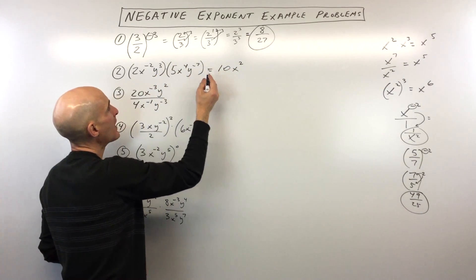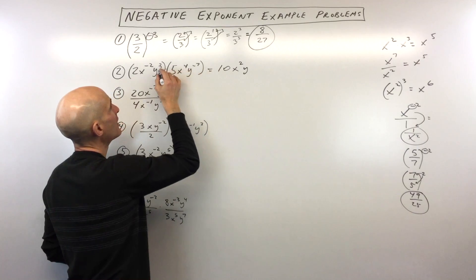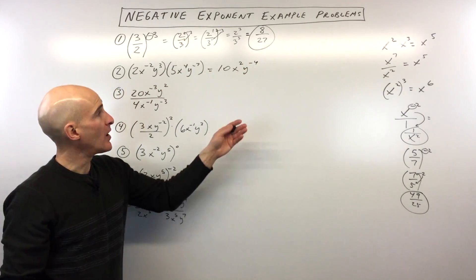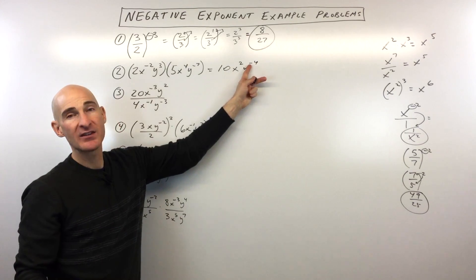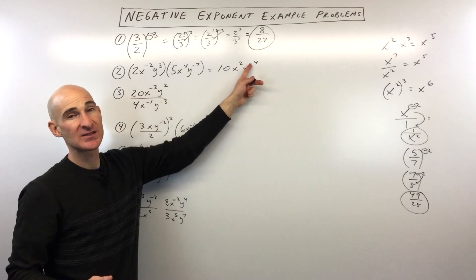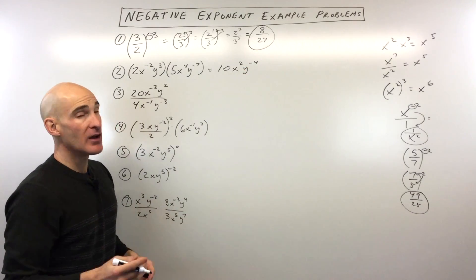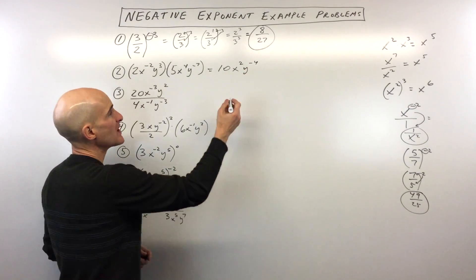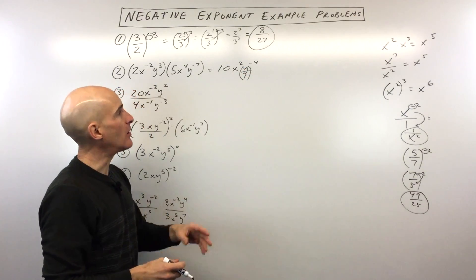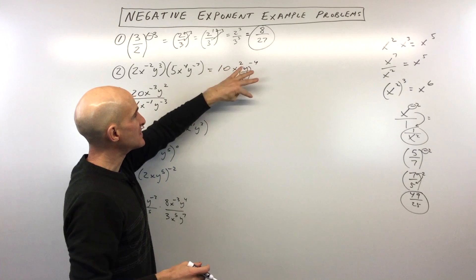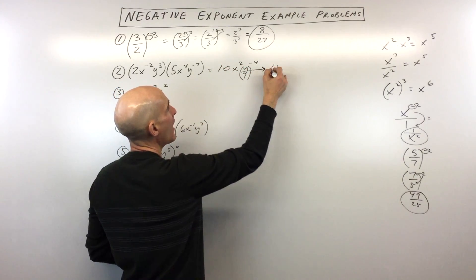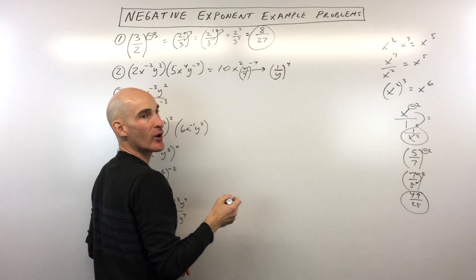And then y cubed times y to the negative 7th — again, we're going to add. So that's going to be y to the negative 4. In your final answer, you don't want to have negative exponents — that's considered improper. You can think of this as y over 1, and the negative says we're going to take the reciprocal. So that means this is really going to be 1 over y to the positive 4.